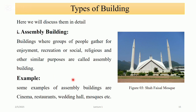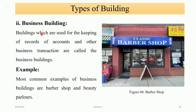Let's discuss these types in detail. First is assembly building: buildings where groups of people gather for enjoyment, recreation, or social, religious, and other similar purposes are called assembly buildings. You can see in the figure a mosque where people are gathered for religious purposes — this is an example of an assembly building. Other examples are cinemas, restaurants, and wedding halls.